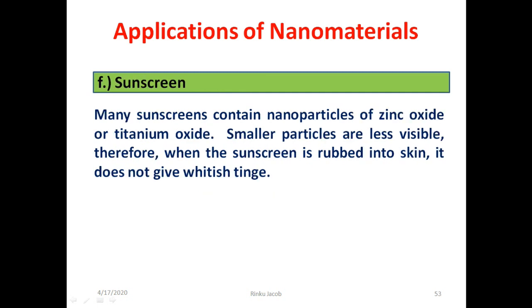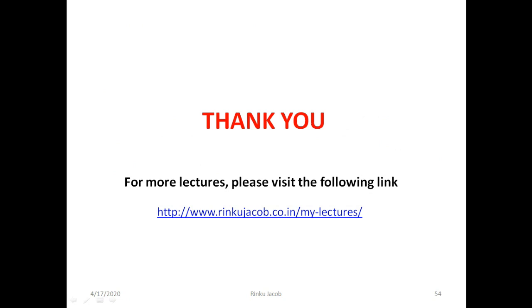Nanomaterials are also used in the production of sunscreen. Many sunscreens contain nanoparticles of zinc oxide or titanium dioxide. Smaller particles are less visible, so when sunscreen is rubbed into the skin, it does not give a whitish tinge. This is the end of this session. Thank you for watching this RZ online video session on the topic nanotechnology. For more lectures, please visit the link shown below.